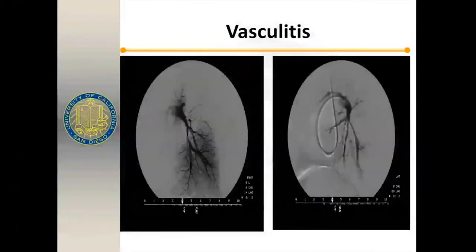Here's an example of a vasculitis case that looks as if there might be chronic clot with some re-canalization. But these vessels are long, narrow, and diffusely diseased. This patient had vasculitis in other organs as well — a CT scan of the aorta showed aortic vasculitis.